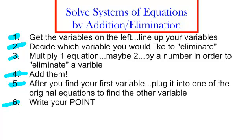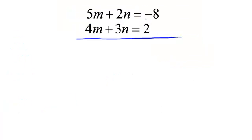Let's get to work. We have 5m plus 2n equals negative 8 and 4m plus 3n equals 2. All of the variables are on the left and they are nicely lined up for me.